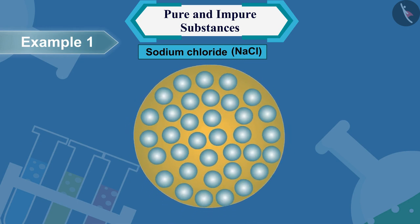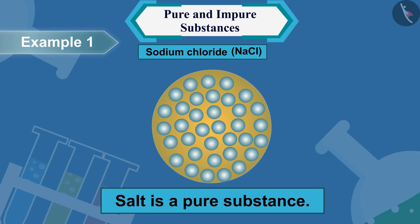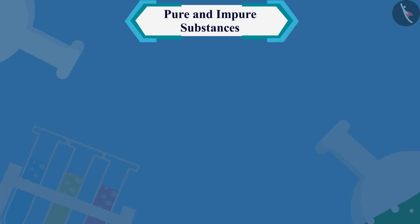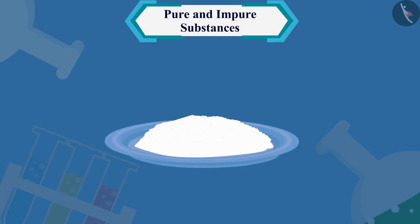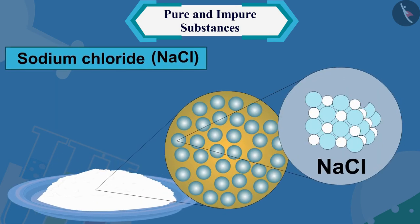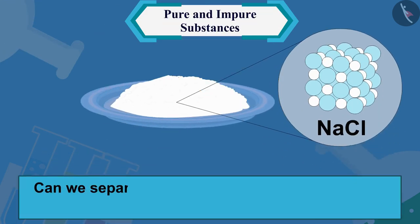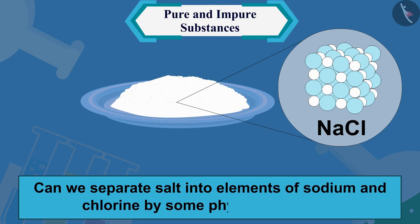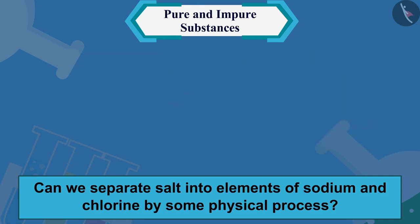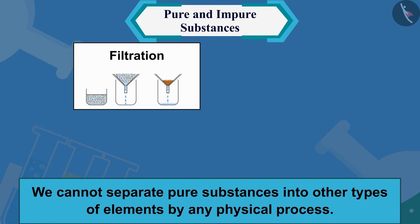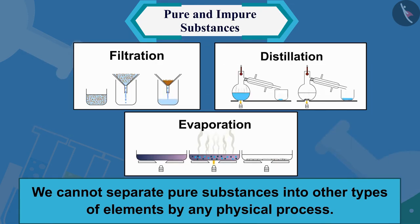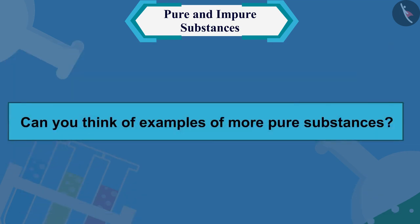The composition of salt is composed of molecules similar to sodium chloride, therefore we can say that salt is a pure substance. We know that salt is made up of sodium chloride molecules. Can we separate salt into elements of sodium and chlorine by some physical process? No. Therefore, pure substances cannot be separated into other types of elements by any physical process.